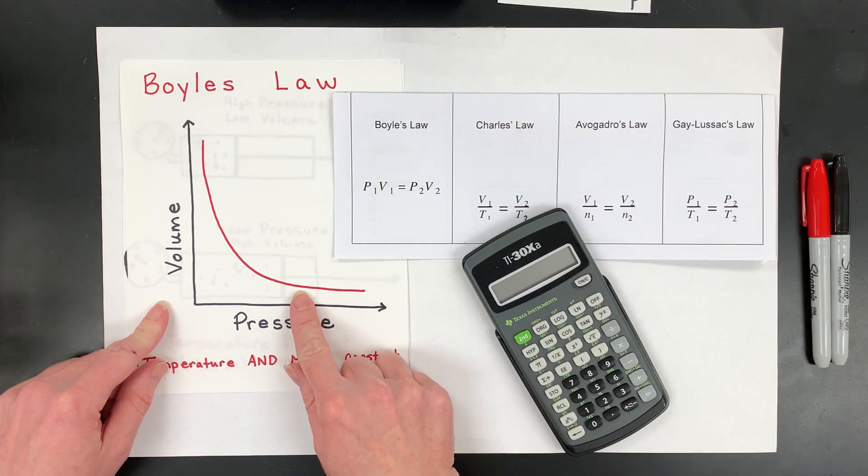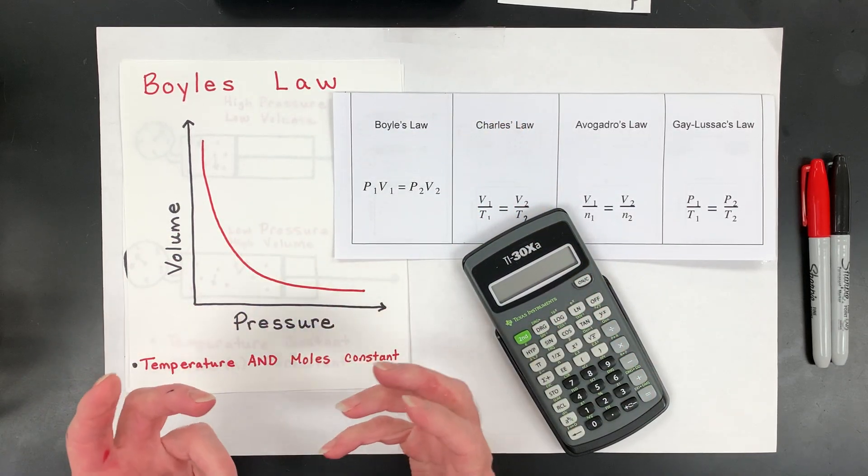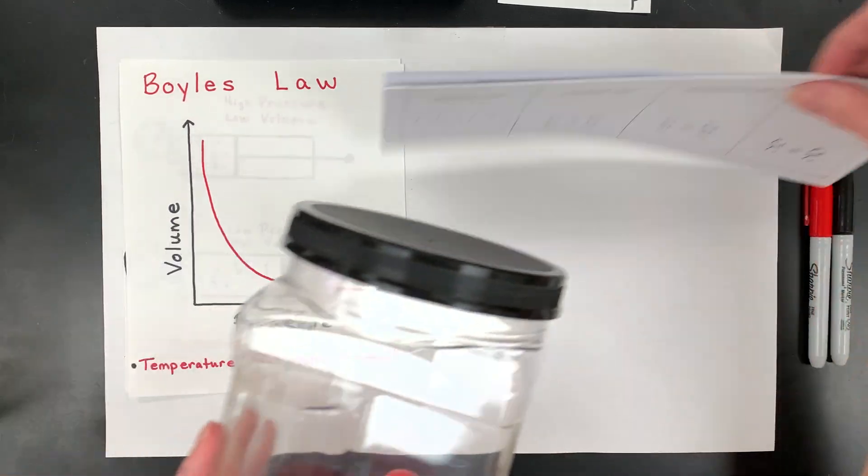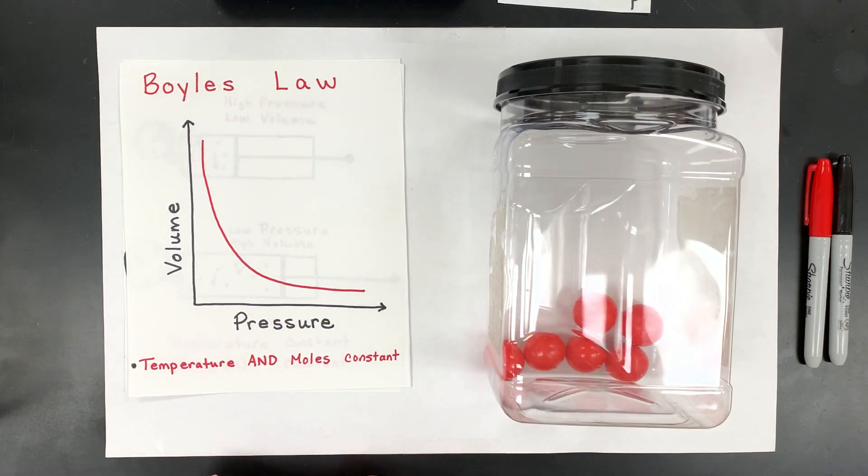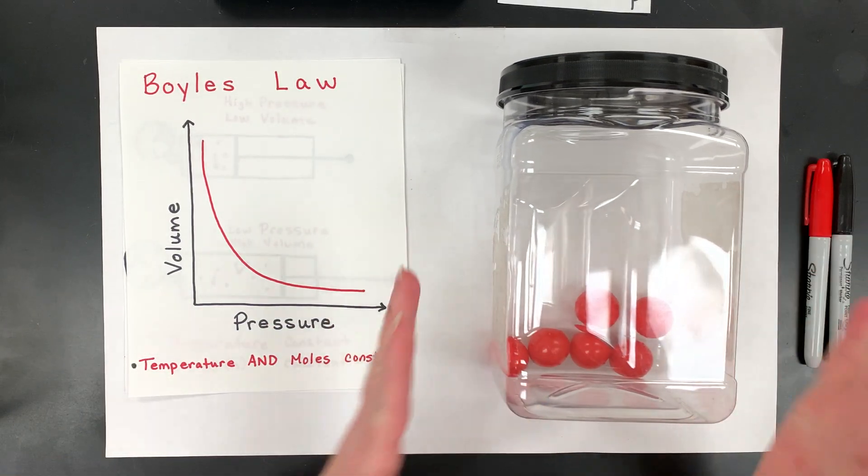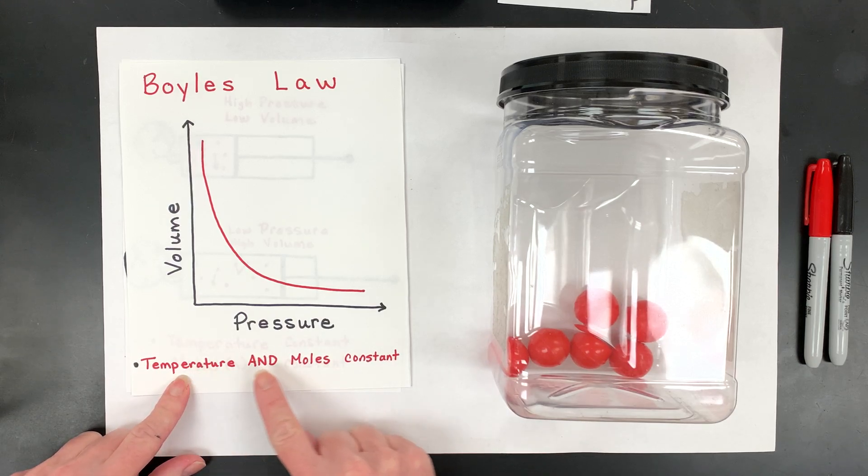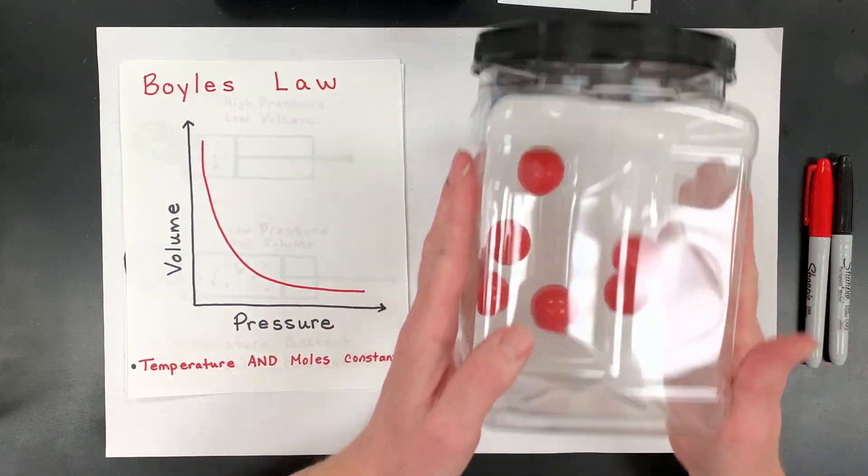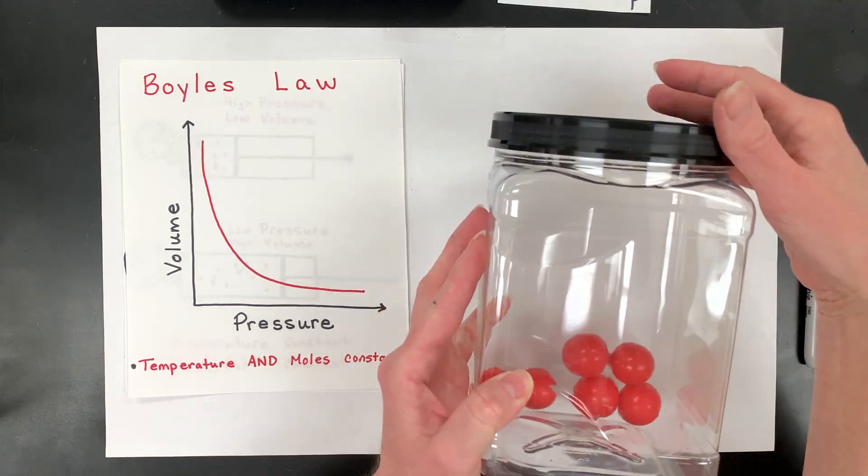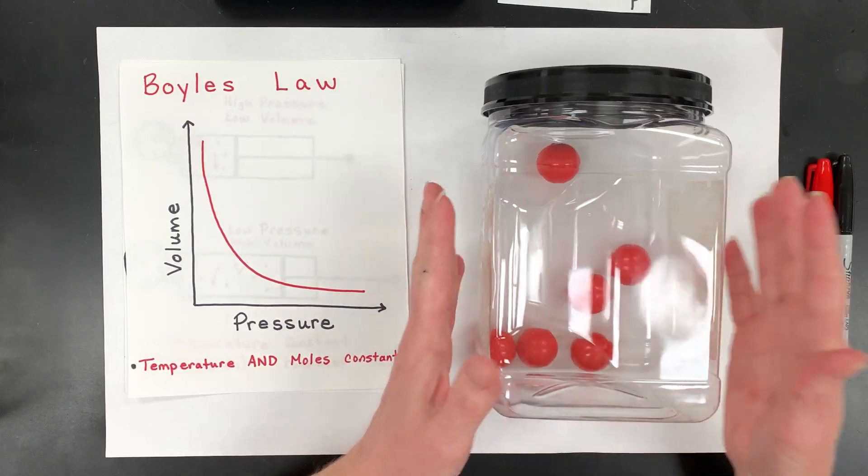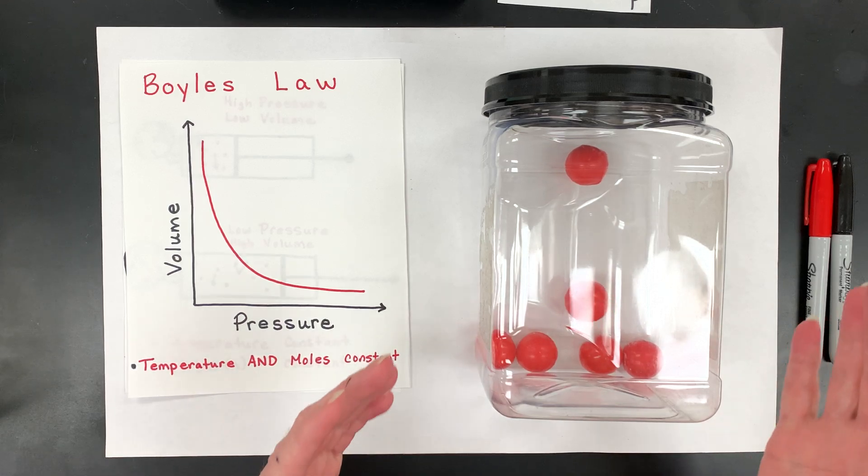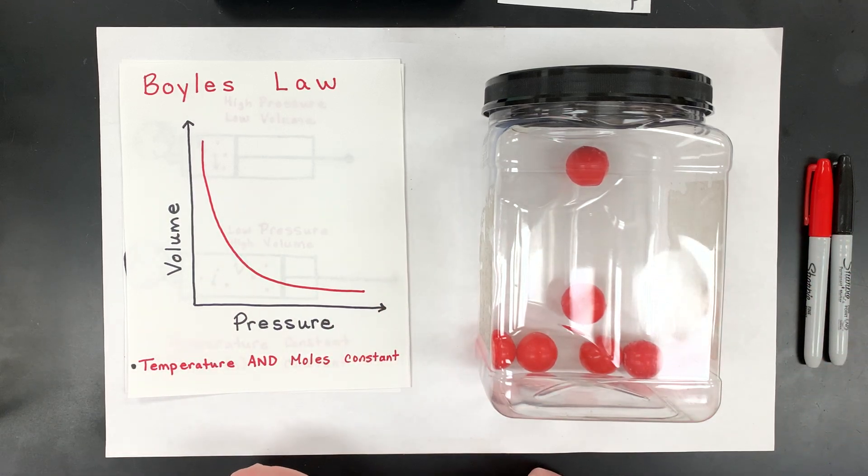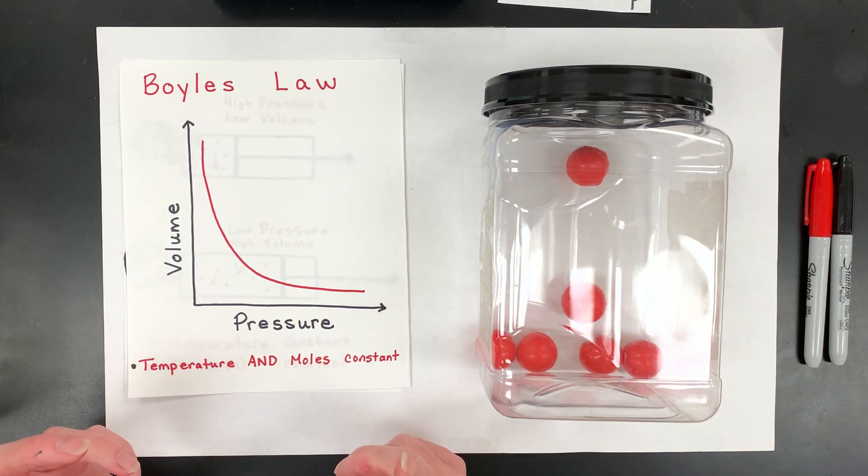So this is what Boyle's Law looks like on a graph, and what a scientist does is they keep a sample of gas. I'm just going to pretend that this is my sample of gas. They keep that sample of gas at a specific temperature, and they do not change the moles. So for example, when I move this, that's going to be my kinetic energy, which is one half mv squared. And I'm going to keep that temperature the same, and I'm not going to change the number of particles when I change the volume.